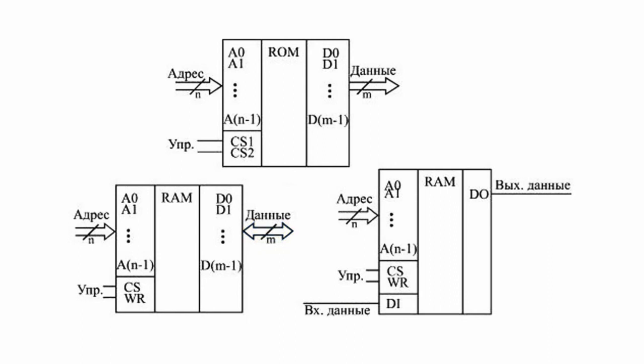The bi-directional bus is normally used when the data bus has 4 bits or more. There are also control incoming outputs that define the chip's operation mode. In the majority of cases, the memory has a chip selection CS input. The RAM also has a write input WR, whose active signal level switches the chip to the write mode.